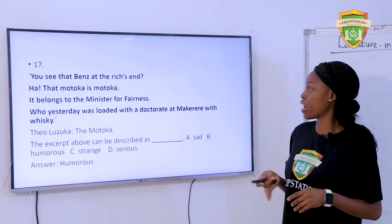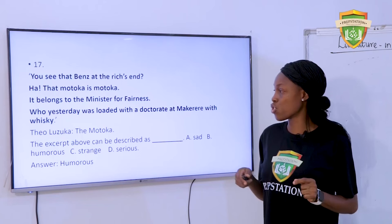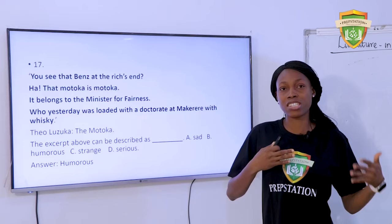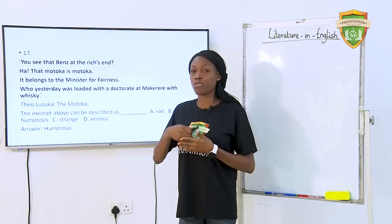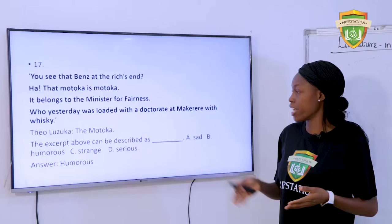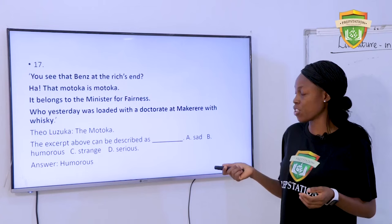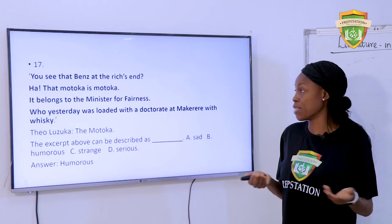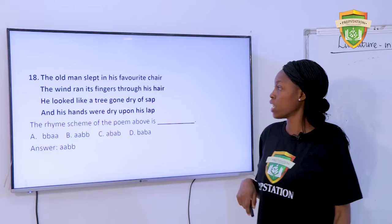Question 17: 'You see that beast at the rich's end? Ha! That motor car is motor car. He belongs to the Minister of Fairness, who yesterday was loaded with a doctorate at Makerere with whiskey.' This is written by Teo Luzuka — 'The Motor Car.' What JAMB does is: when they bring a seen and unseen excerpt, the unseen aspect means the writer's name is not stated, but for the seen, you have the name of the poet or author at the end. The excerpt above can be described as — A. Sad. B. Humorous. C. Strange. D. Serious. The answer is humorous because it's funny and the speaker creates humor with spellings like 'motor car' and 'Minister of Fairness.'